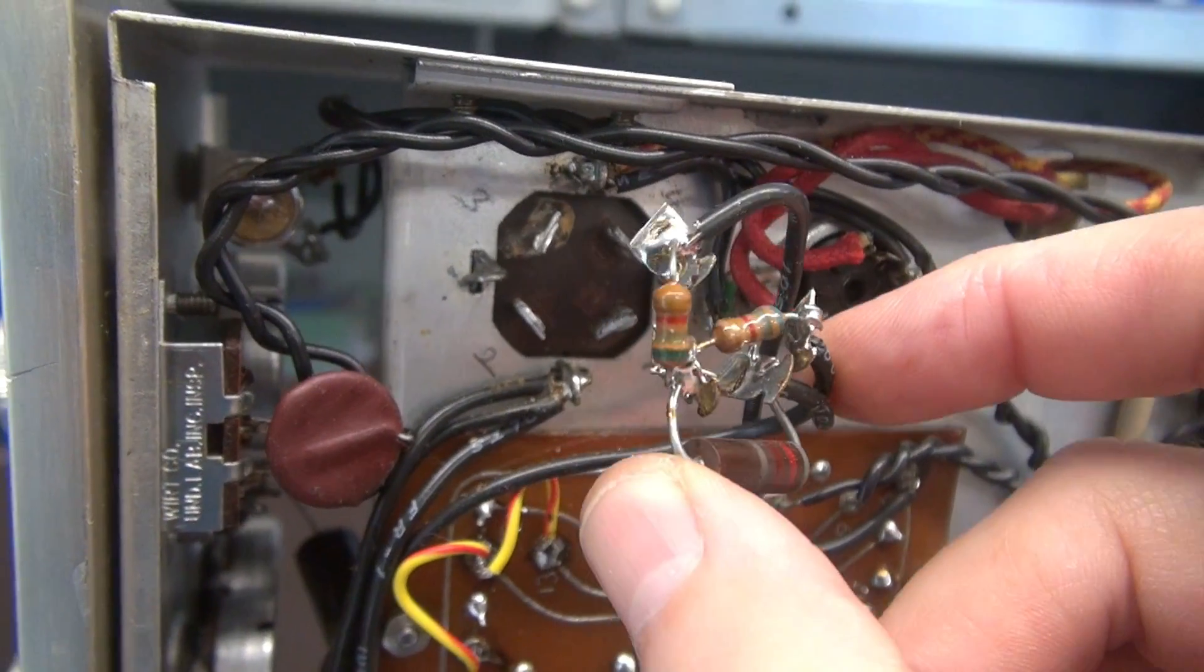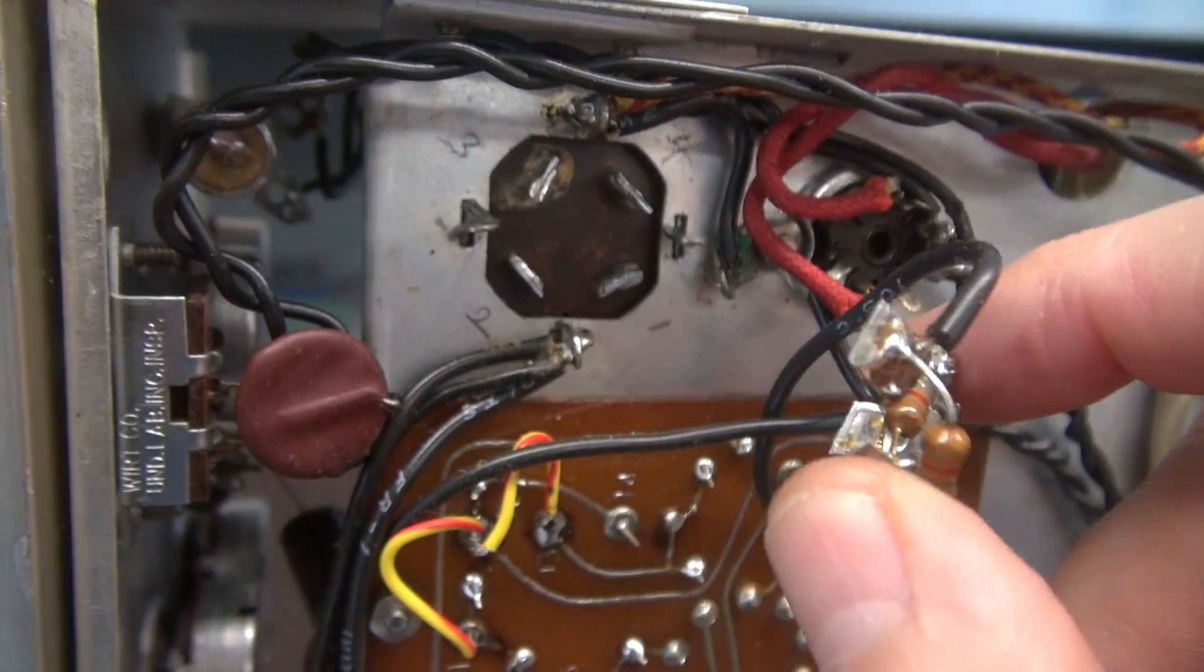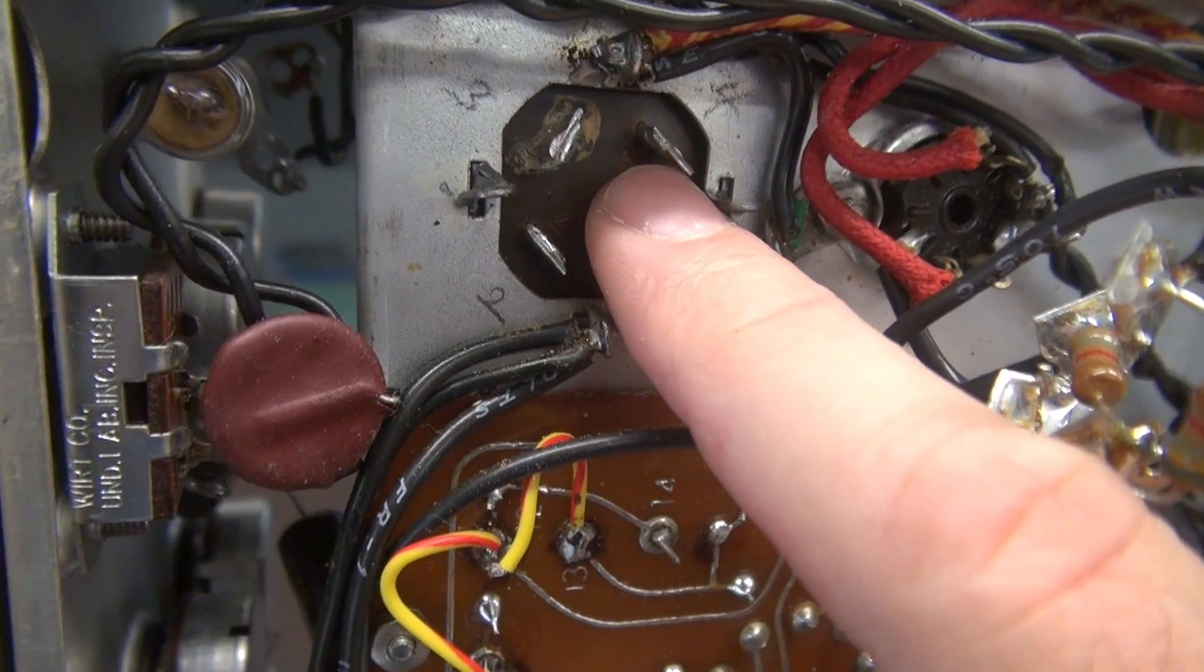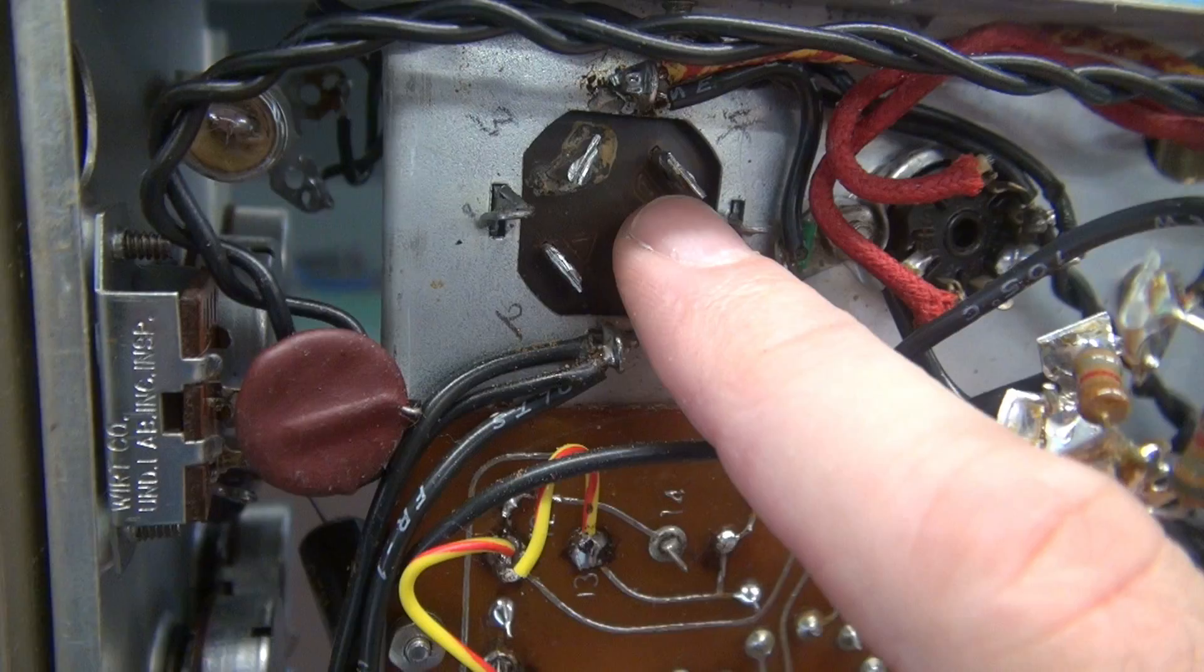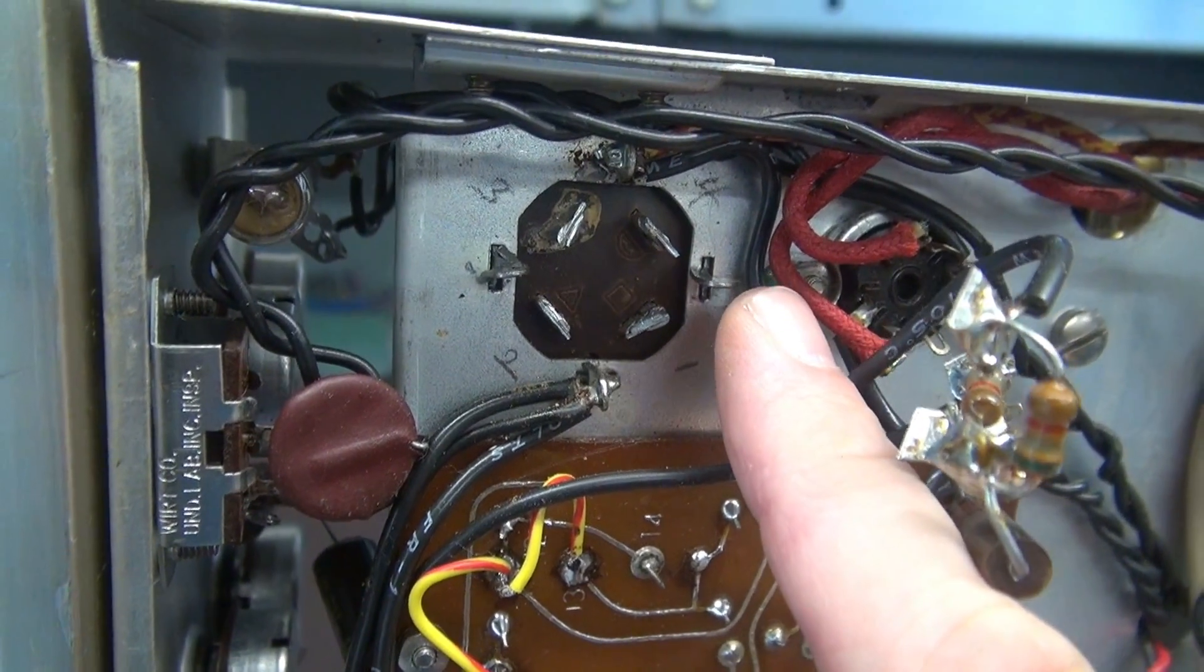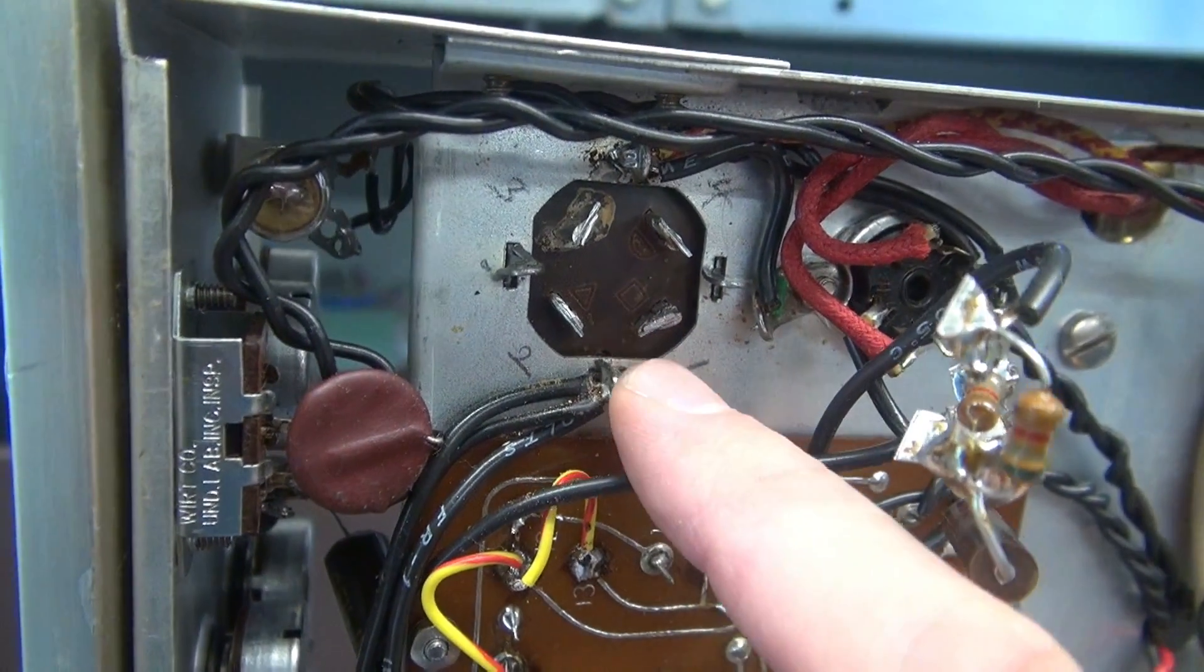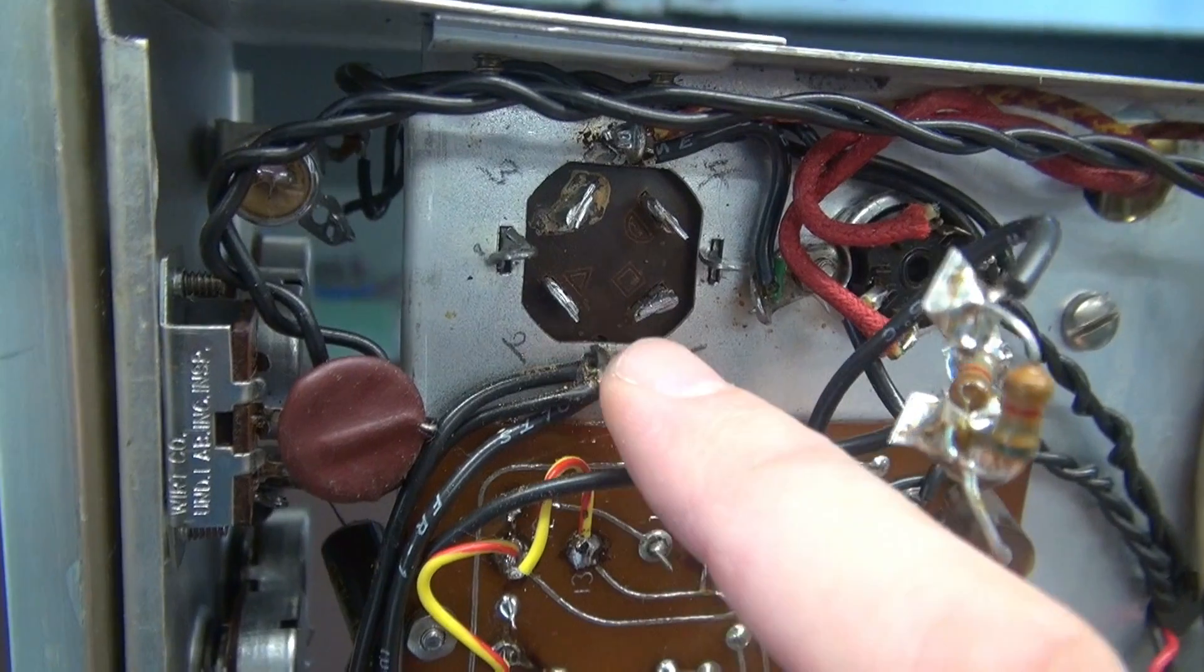All right, I've got everything hanging here in outer space. The filter cap now is totally disconnected. If you take a look at that terminal, you can see she was leaking, right? So they want you to leave this can in place not only for cosmetics, right? When you look inside and say, hey, look, I still got a filter cap. It also has the landing point for the grounds.